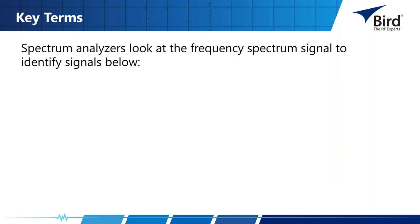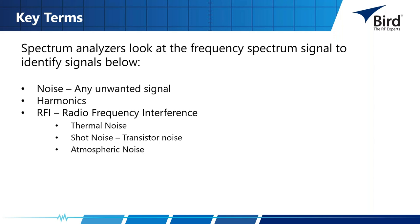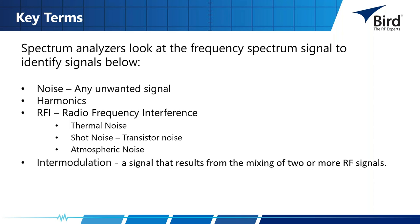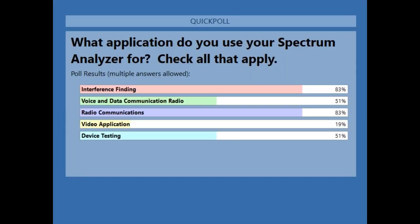Some key terms: a spectrum analyzer looks at the frequency spectrum to identify various signals. It helps you find noise, defined as any unwanted signal. It can look at harmonics, RFI (radio frequency interference) from sources such as thermal noise, shot noise, transistor noise, and atmospheric noise. It can also analyze intermodulation — a signal resulting from the mixing of two or more RF signals — and examine the noise floor.